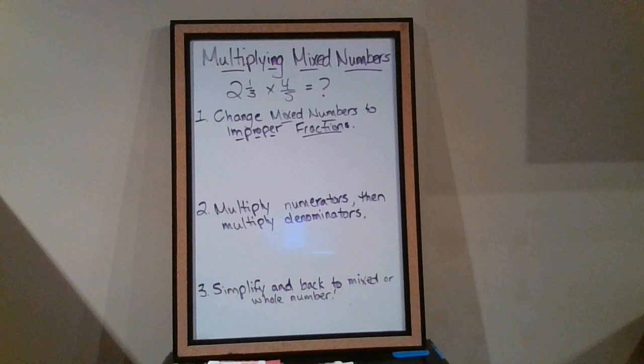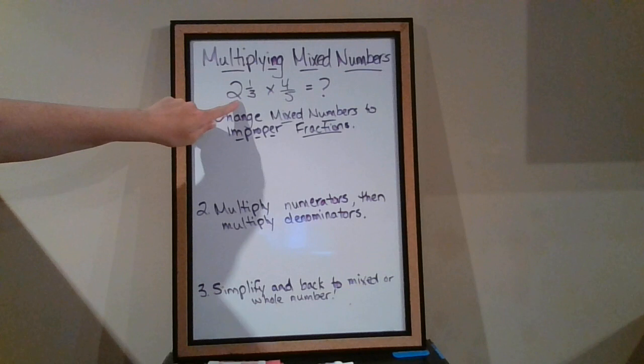All right, hello again, grade eights. This is our third mini lesson on multiplying fractions, and so far we've learned that it's a little bit simpler than adding or subtracting fractions. There's just a few steps to follow. So far we learned about multiplying a fraction by a fraction, and then we learned about taking a whole number and multiplying a whole number by a fraction. Today it gets a little bit more complicated in that we're going to look at mixed numbers.